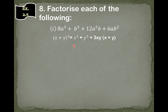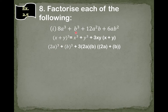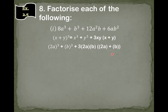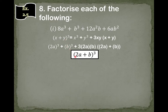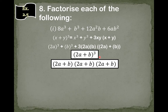Now we will put our values into the identity. The cube root of 8a³ is 2a, and the cube root of b³ is b. So x = 2a and y = b. Then 2a × b = 2ab, and 2ab × 3 = 6ab. Then 6ab × 2a = 12a²b, and 6ab × b = 6ab². So our answer is (2a + b)³.